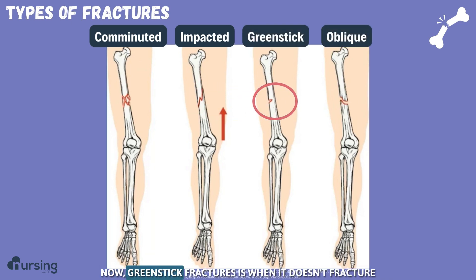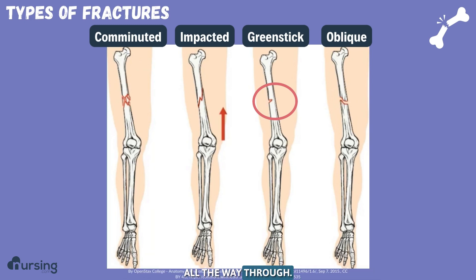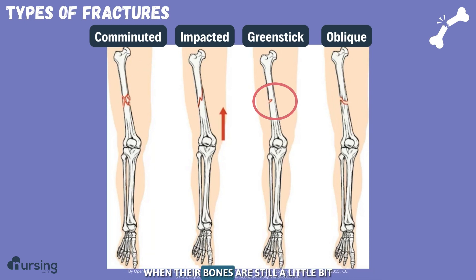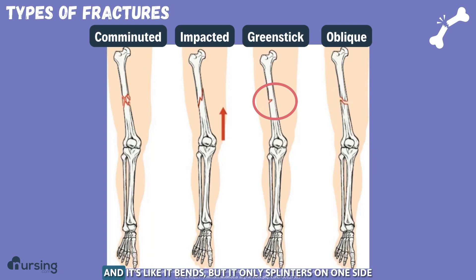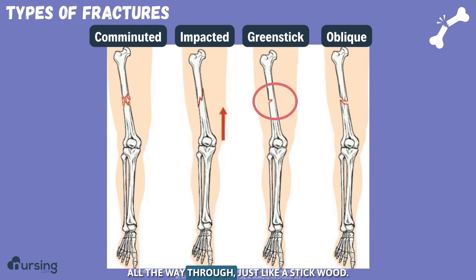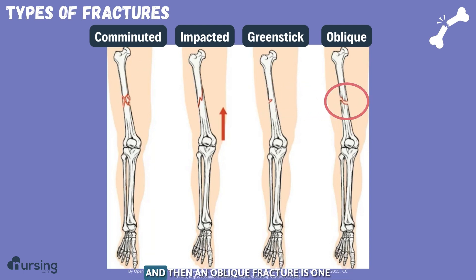A greenstick fracture is when it doesn't fracture all the way through. This happens in children when their bones are still a little bit softer and more flexible. It bends but only splinters on one side and doesn't actually crack all the way through — just like a stick would.